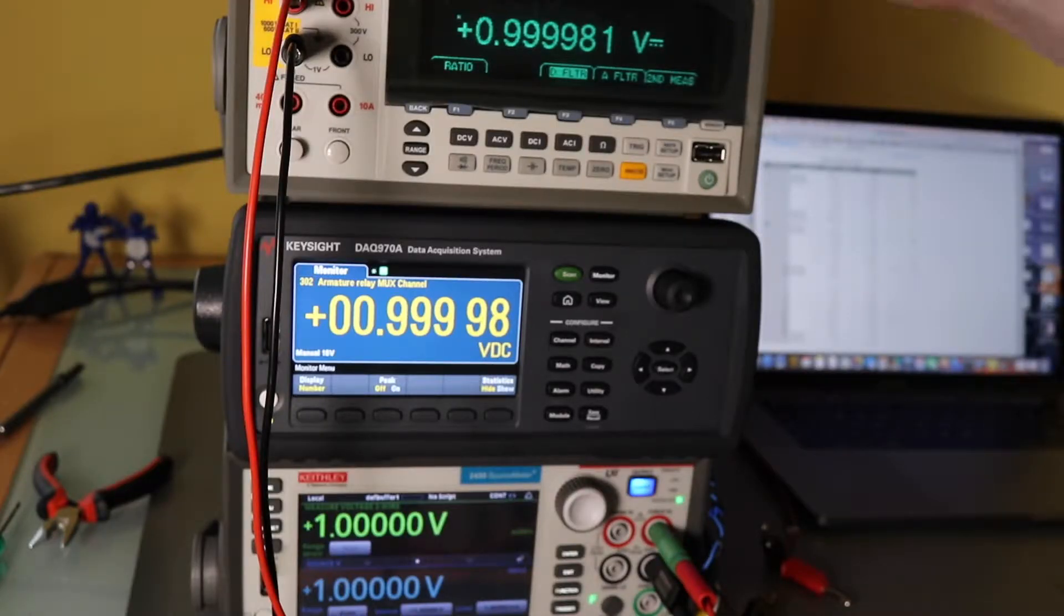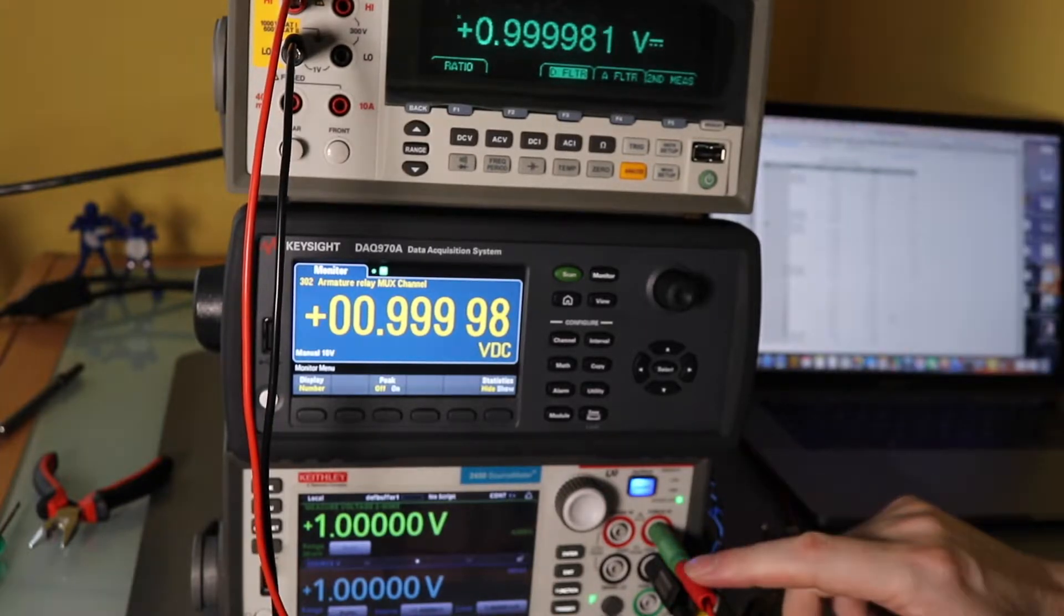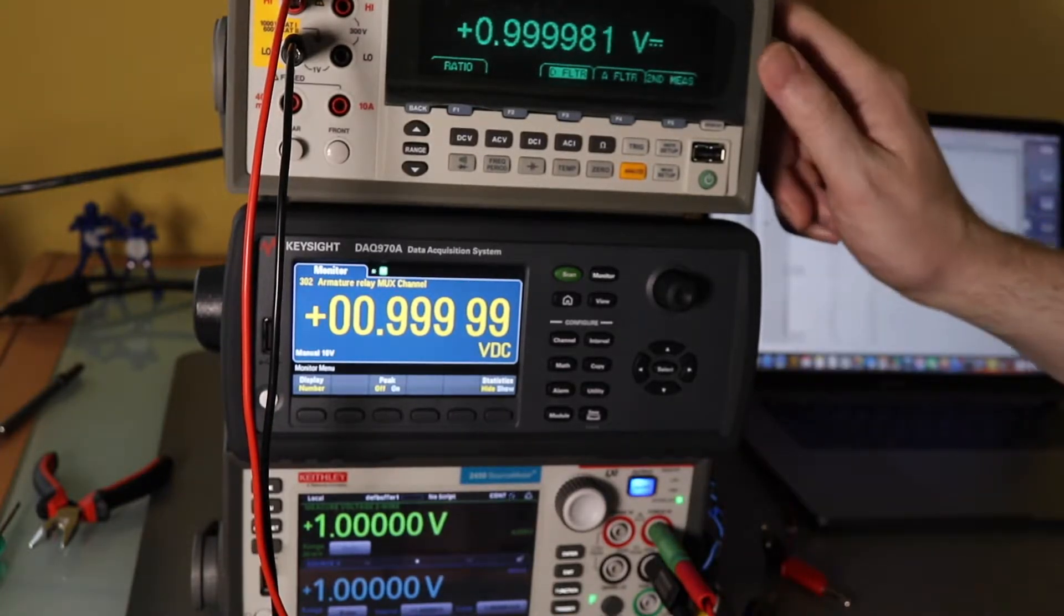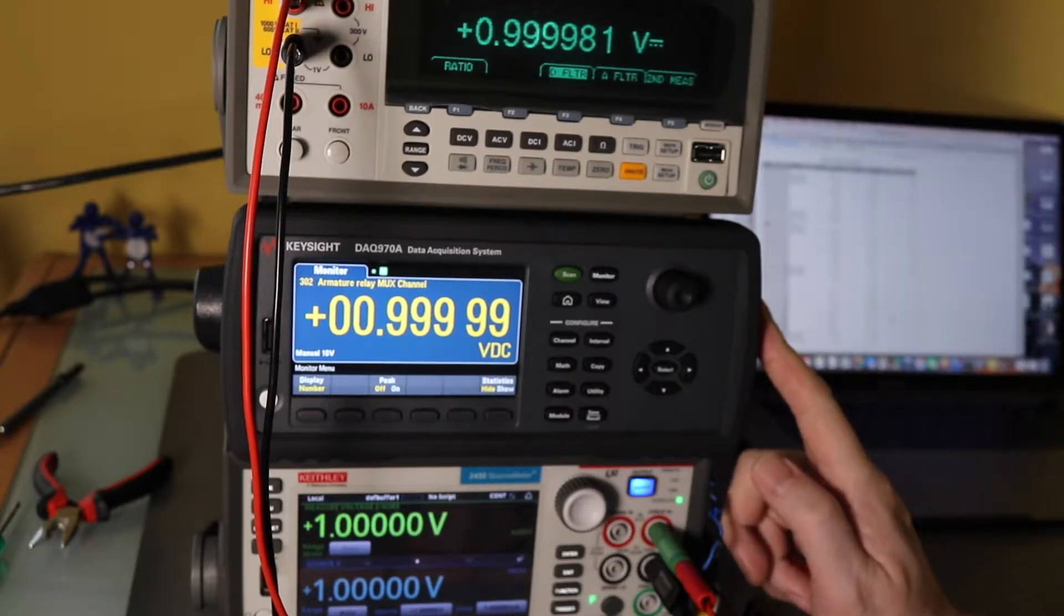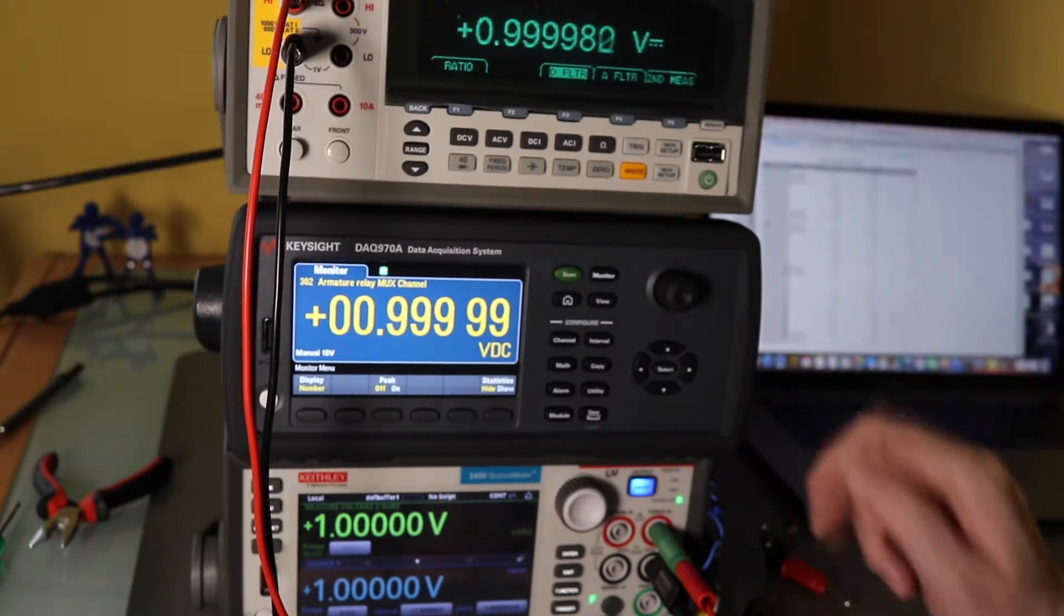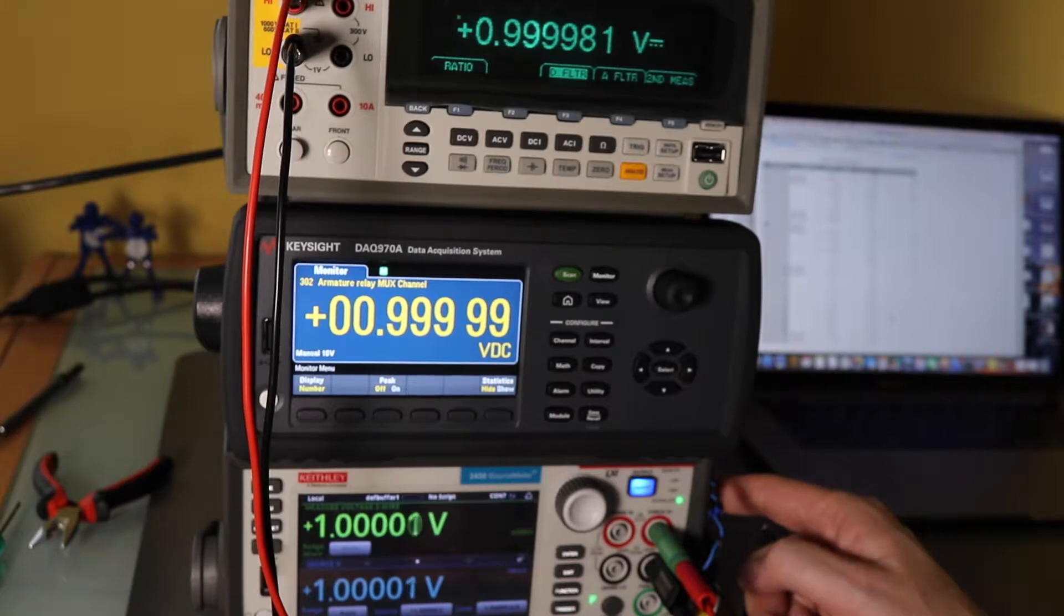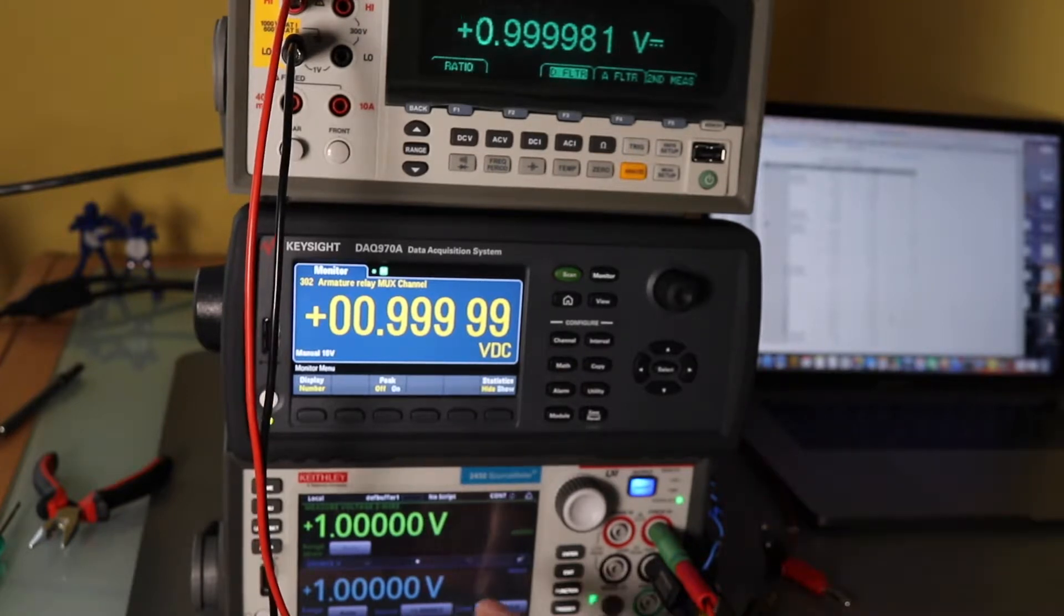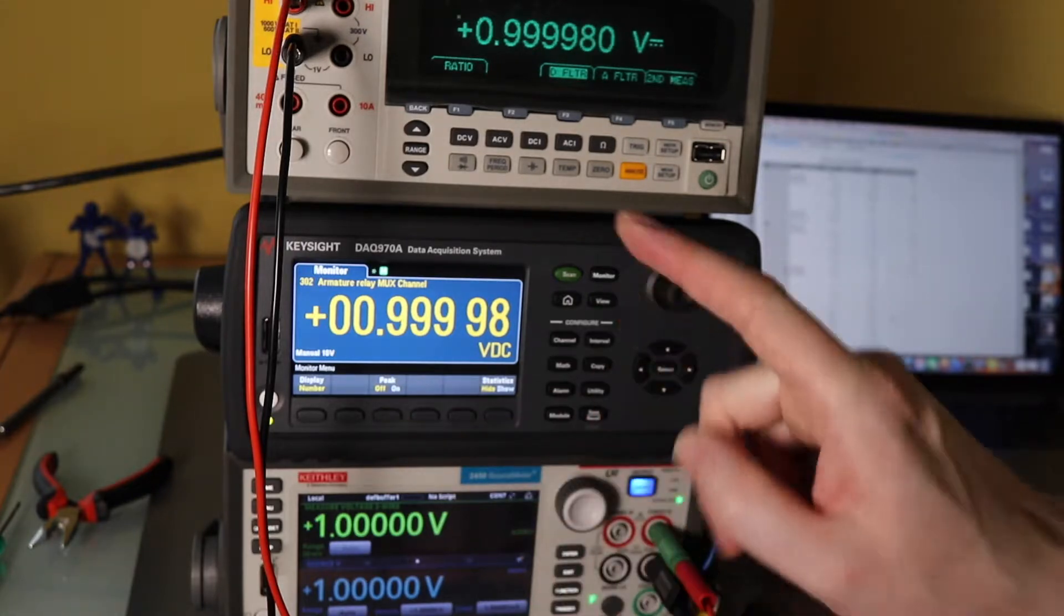OK, I've now set up a Fluke 8846A in parallel with Keysight. Initially it read the same as Keysight DAC. And I then change settings on the source meter to source voltage and read voltage back. And now it seems to have corrected the output.